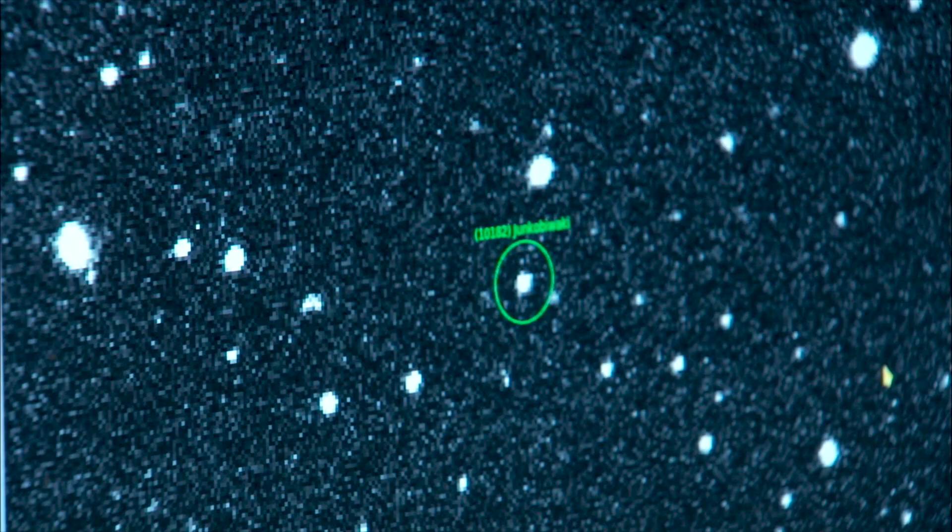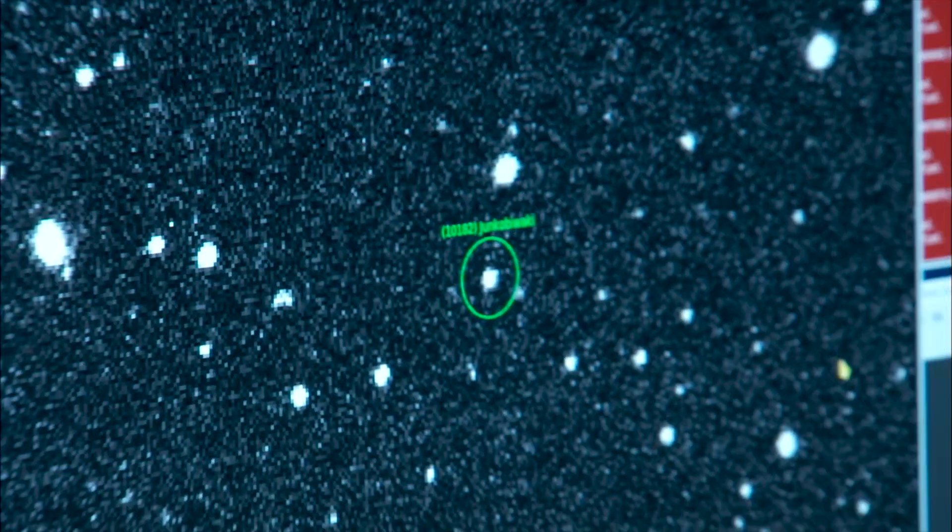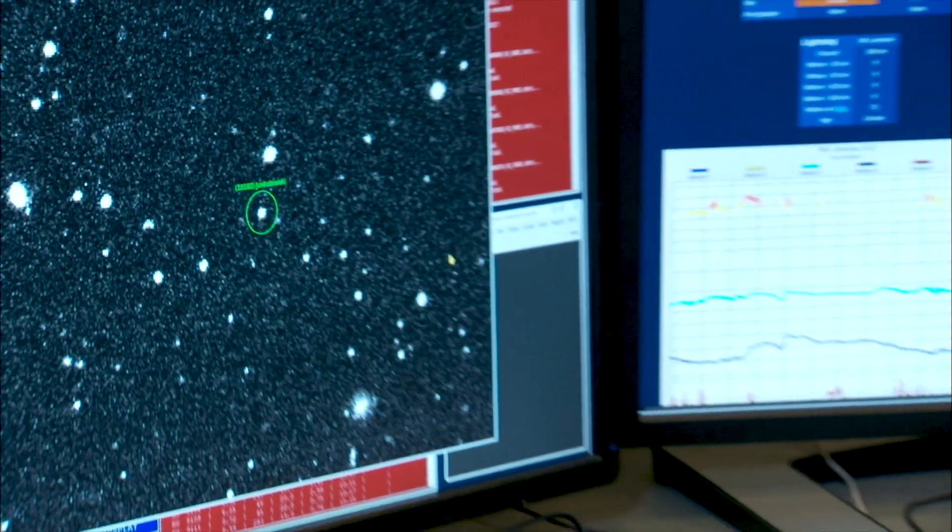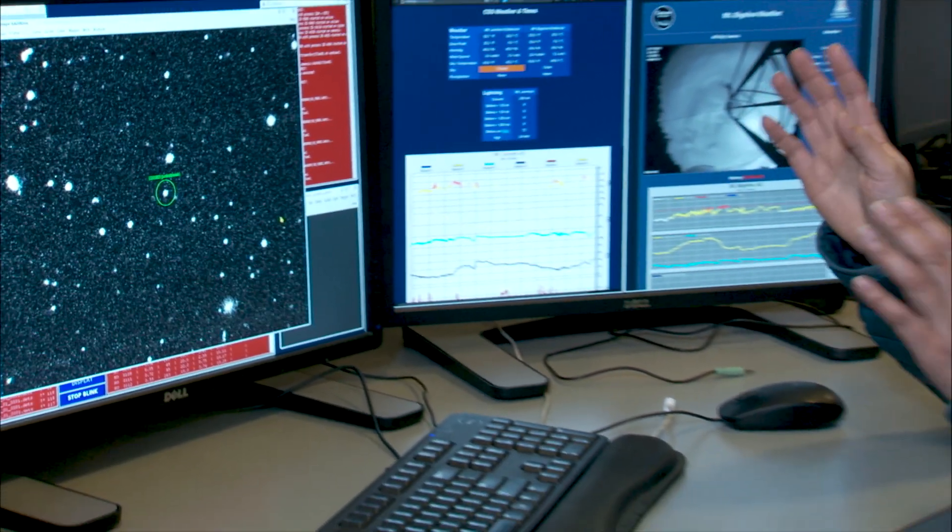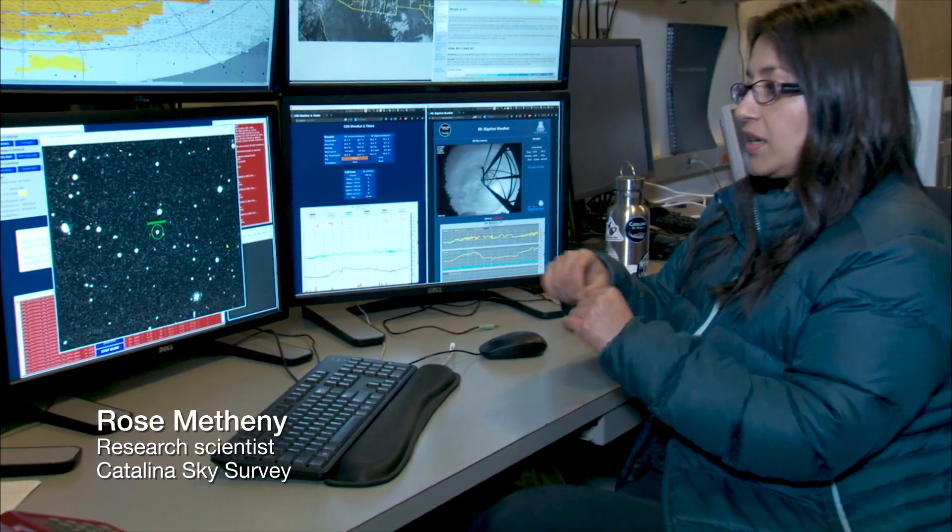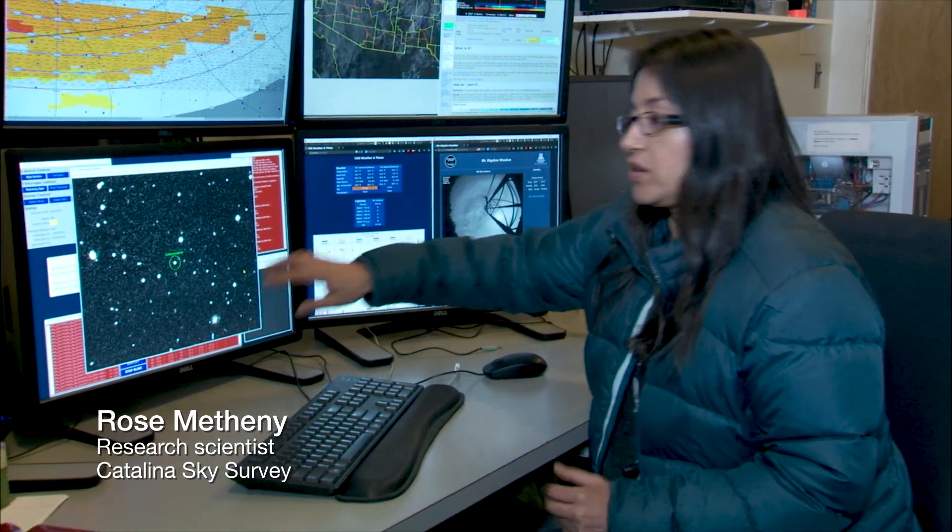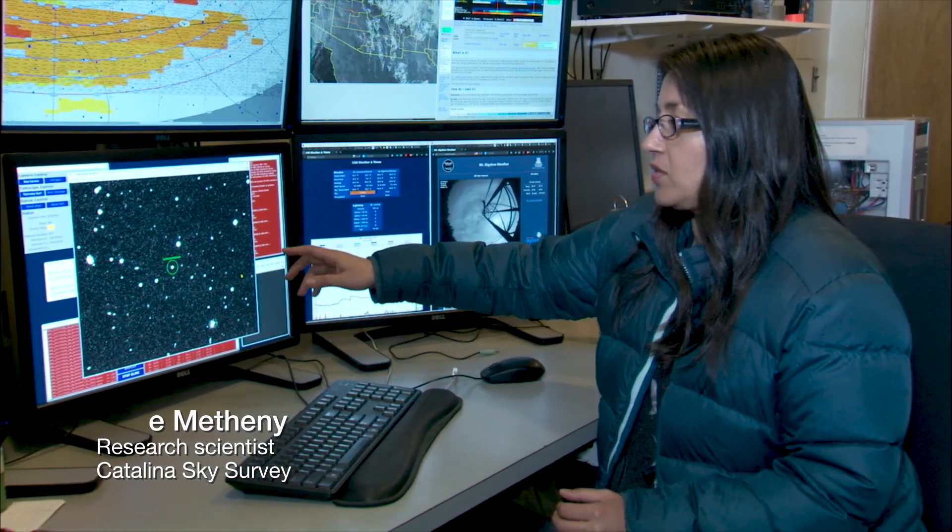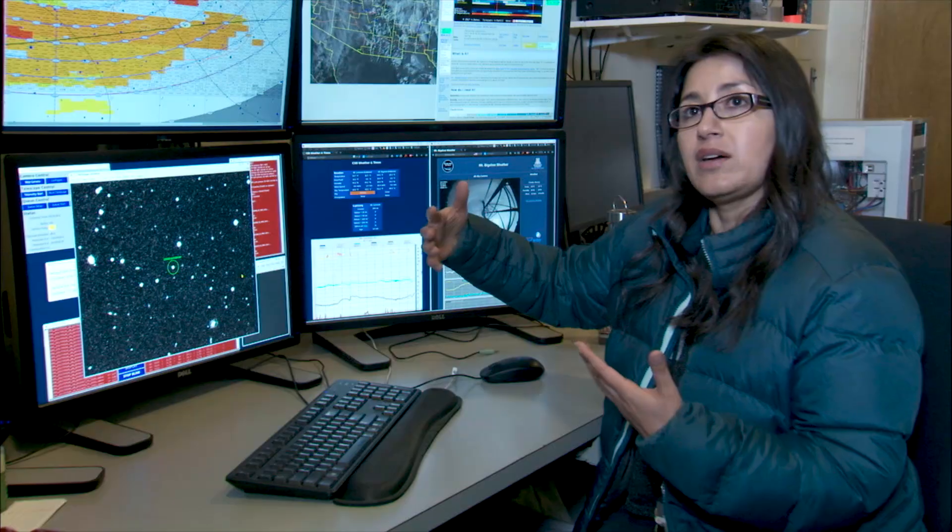In order to find a near-Earth asteroid, we take four images of a patch of sky separated by about five minutes. We take those four images and we blink them really fast and it creates this little animation so we can see that the stars in the background are static as they should be. And if there's anything that's moving, it'll pop out.